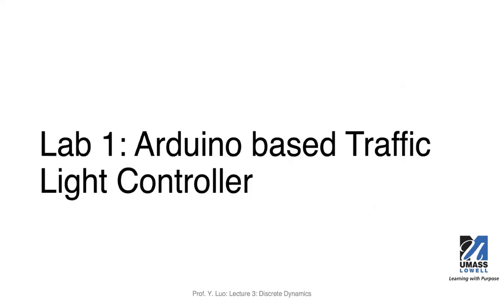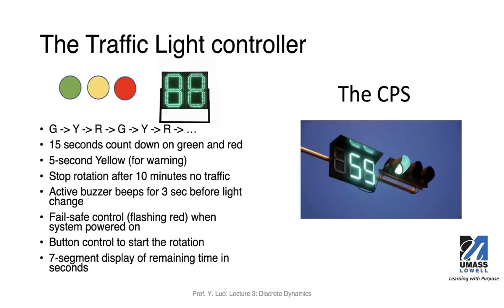That was a quick description of GPIO. In the next 20 minutes, I'll talk about Lab 1 — the traffic light controller. To recap: we want a basic rotating pattern of green, yellow, red. We want a 15-second countdown on green and red — green stays on for 15 seconds, followed by yellow for five seconds as a warning, then red for another 15 seconds.